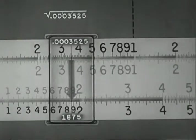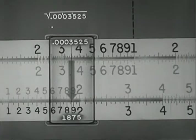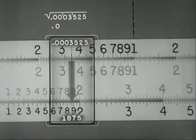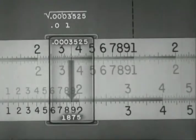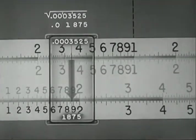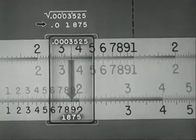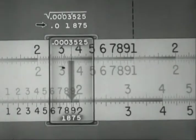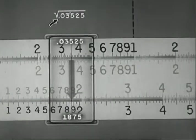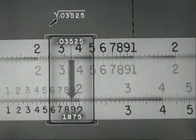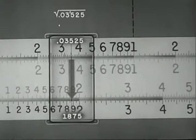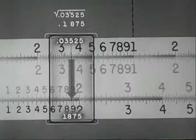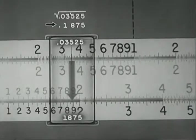With this problem, place the decimal point for the answer. Place a cipher under the pair of ciphers, the 1 under the next pair, then the 875. The answer is .01875. If the decimal point were here in the problem, place the decimal point, then the 1 under the pair, then the 875. The answer is .1875.